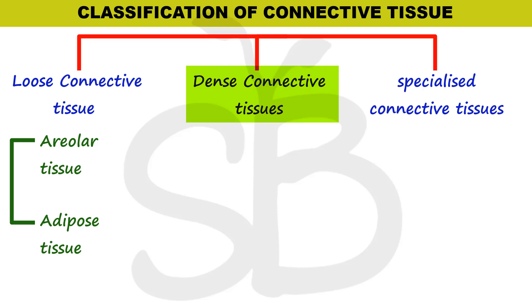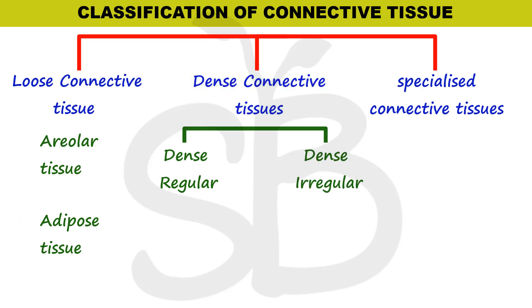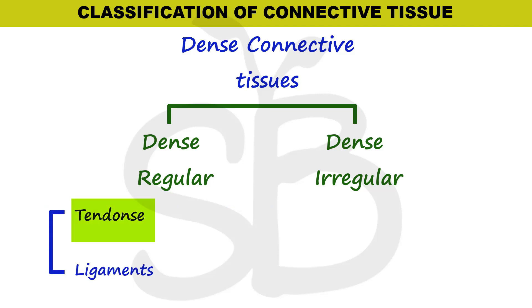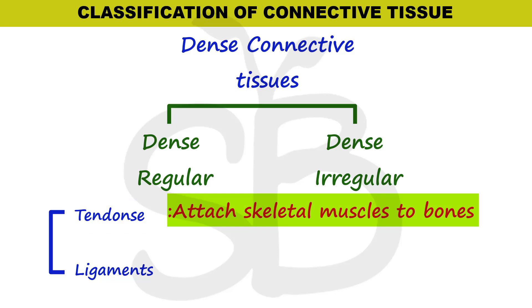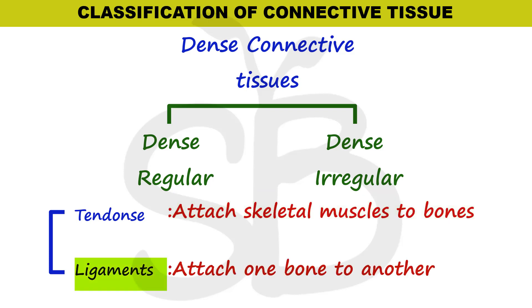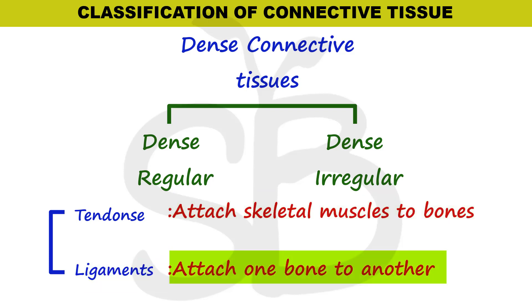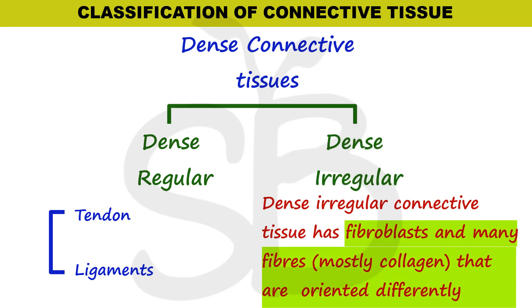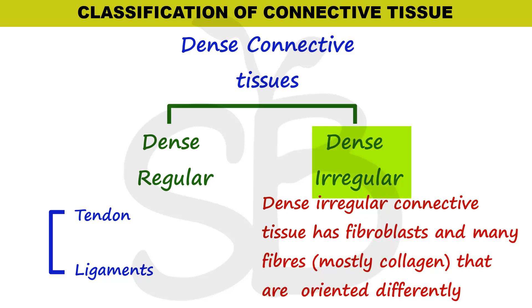Dense connective tissue has fibers arranged more densely. There are two types: Dense Regular Connective Tissue and Dense Irregular Connective Tissue. In dense regular connective tissue, the fibers are arranged in a definite order. Two examples are tendon and ligament. In dense irregular connective tissue, the fibers are arranged irregularly, and an example is the skin.